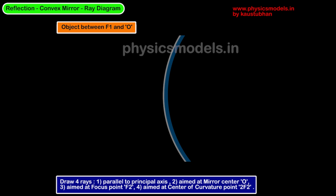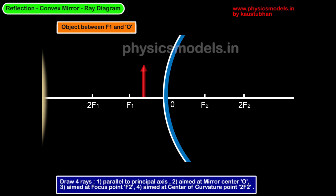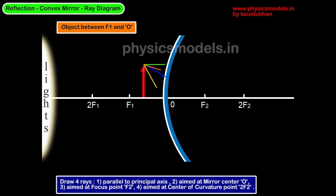Now we will go to the last position where we have brought the object even closer to the mirror. We draw the principal axis and place the object between F1 and O. It can't get any closer than this. We draw the same four rays because we can do that. We draw one ray parallel to the principal axis, one ray aimed at 2F2, one ray aimed at F2, and one ray aimed at O.